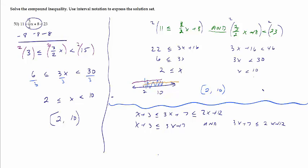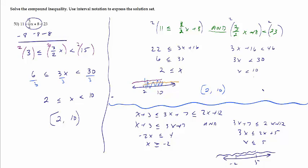I'll go through this really quickly. If I subtract 3x from both sides, I'm going to have negative 2x, and then subtracting 3 from both sides gives me less than or equal to 4. Dividing by negative 2 — and remember to flip because I divided by a negative — x is greater than or equal to negative 2. On this other one, subtract 7 from both sides: 3x is less than or equal to 2x plus 5. Subtracting 2x from both sides: x is less than or equal to 5. Graphing together, the overlap is from negative 2 to 5, and both of these endpoints are square brackets.